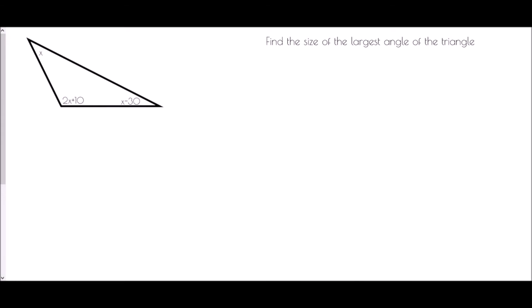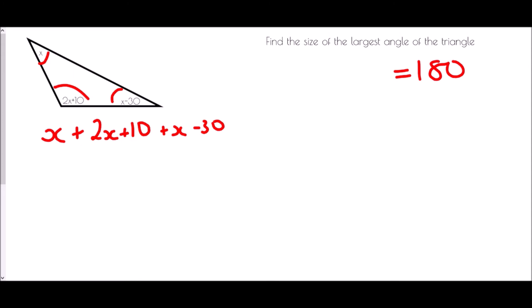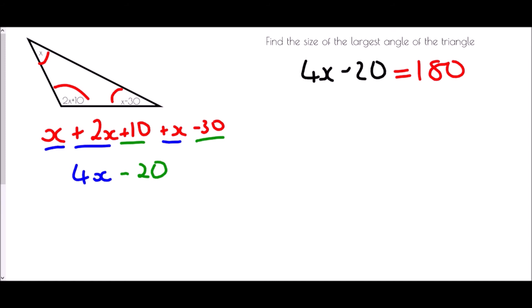Next we have a triangle and we need to find the size of the largest angle. The angles are given as algebraic expressions: x, 2x + 10, and x − 30. We need the extra knowledge that angles in a triangle always add up to 180°. So: x + (2x + 10) + (x − 30) = 180. Simplifying: x + 2x + x = 4x, and 10 − 30 = −20, giving 4x − 20 = 180.